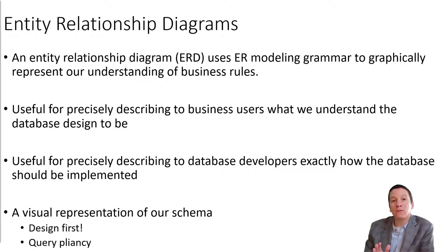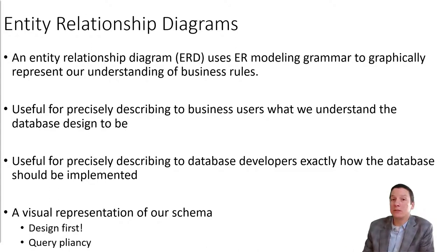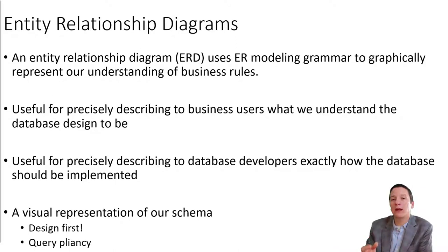One of the important things about relational databases is they are based on the principle of design first — we design our schema and put all constraints in place before we ever start putting data into the database. This is a little different from how some non-relational databases work, where you can start putting data in without having designed the schema. The benefit of this design-first approach is what we call query pliancy: we can ask any question of our relational database because we know what the data is going to look like, even if we don't know what questions we'll ask. Non-relational databases work in the other direction — you may know the questions but not the data structure ahead of time.